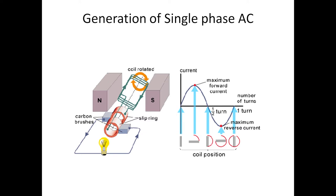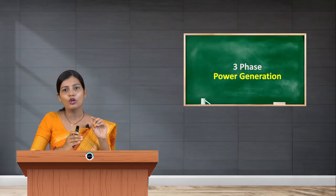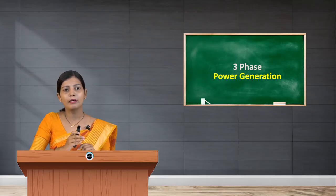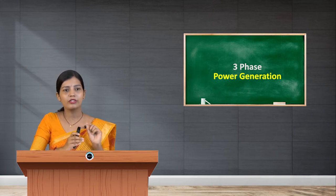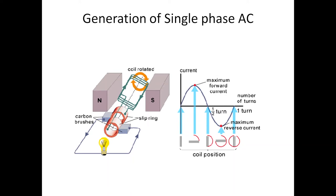So this rotating coil will be constantly cutting or disturbing those magnetic field lines. Due to that disturbance in magnetic field lines, a current is induced or EMF is induced in the coil. That itself is shown in the graph there. You can find a sinusoidal wave with a maximum forward current and maximum reverse current. This is just due to the change of direction of the coil. In this way, generation of single-phase AC is done.